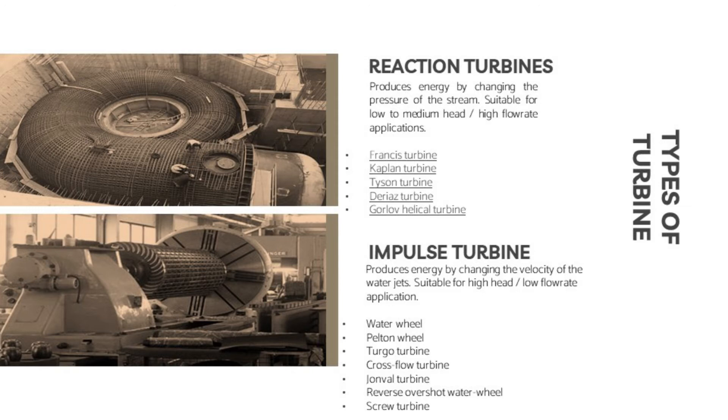For reaction turbines, they produce energy by changing the pressure of the stream, suitable for low to medium head, high flow rate applications. The reaction turbines are Francis turbine, Kaplan turbine, Tyson turbine, Deriaz turbine, and Gorlov helical turbine. The Francis turbine is actually a reaction turbine plus impulse turbine because the shape of the blade has a curve that will change the velocity of the stream, so it can be categorized as both.